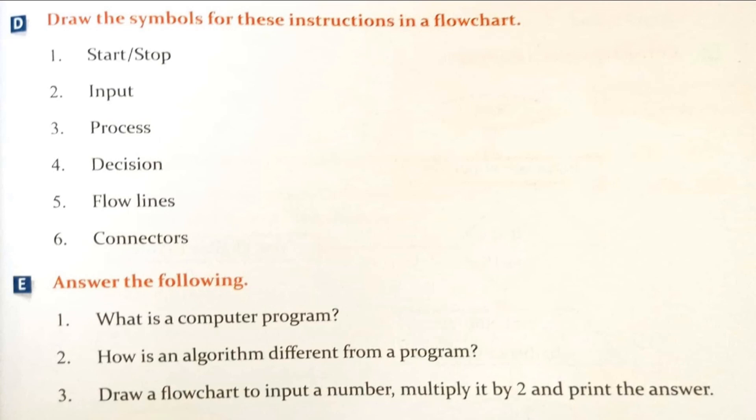Part D: Draw the symbols of these instructions in a flow chart. START/STOP ke liye oval shape. Input ke liye parallelogram. Process ke liye rectangular box. Decision ke liye diamond box. Flow lines ke liye arrows. Connectors ke liye circle.